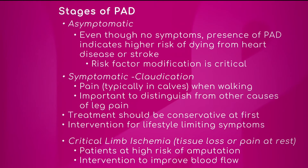A lot of times it's a chronic process — as the disease starts narrowing the blood vessel, you can start having a situation where you're not getting enough blood to that extremity over time. That can lead to tissue loss, or you may get an ulceration that you're not able to heal. Blood brings the nutrients to the tissues, so if you're not getting enough blood supply, you may not be able to get oxygen, nutrients, antibiotics, or medicines to that extremity — and that's how you start getting ulcerations that may not heal.